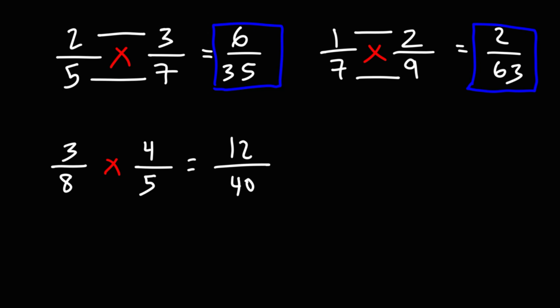Now, notice that both numbers are even, which means we could divide them by 2. So you need to check if you could simplify the fractions. 12 divided by 2 is 6. 40 divided by 2 is 20.